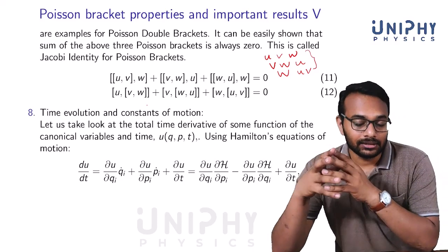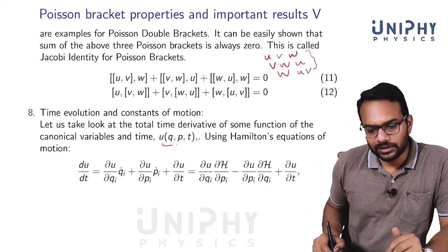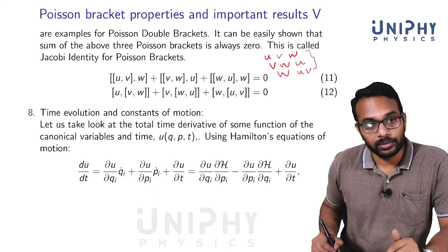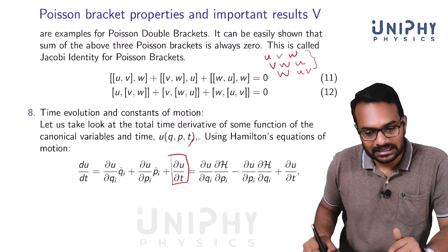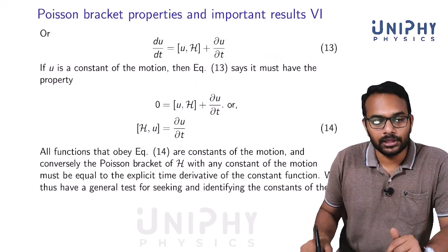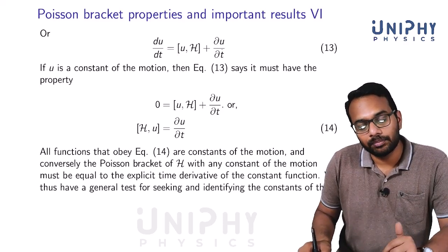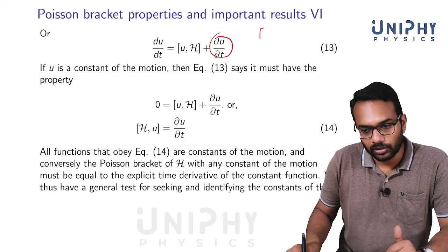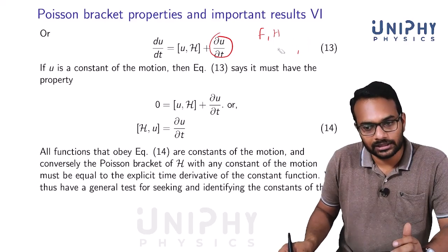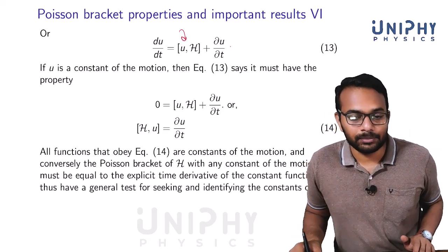Now let us look at time evolution and constants of motion. For a function u(q, p, t) with explicit time dependence, du/dt = (∂u/∂q_i)q_i-dot + (∂u/∂p_i)p_i-dot + ∂u/∂t = {u, H} + ∂u/∂t. Earlier we assumed f had no explicit time dependence, which is why there was no extra ∂f/∂t term. So du/dt equals the Poisson bracket of u with H plus ∂u/∂t.